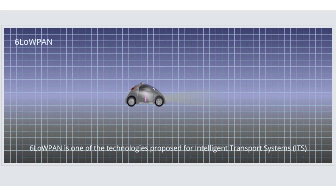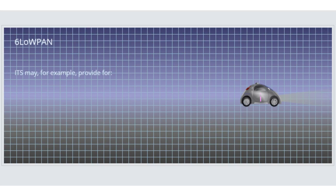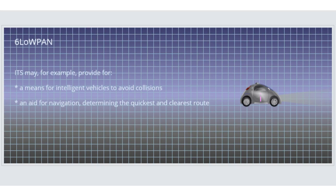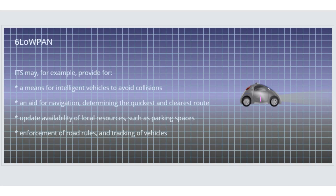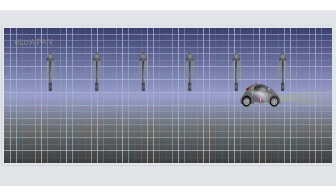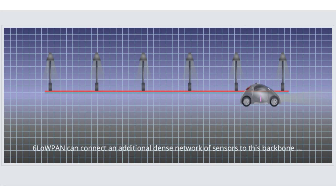6LoWPAN is one of the technologies proposed for Intelligent Transport Systems. ITS may, for example, provide a means for intelligent vehicles to avoid collisions, an aid for navigation determining the quickest and clearest route, a means of updating availability of local resources such as parking spaces, and for the enforcement of road rules and tracking of vehicles. Where an existing mains-powered network may already link road traffic furniture, 6LoWPAN can connect an additional dense network of sensors to this backbone, providing multiple vantage points and redundancy at relatively low cost.